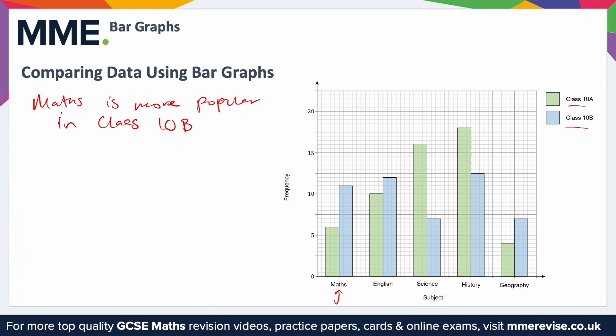What other conclusions could we make? Well, of course you could do a similar thing for English — you could say English is more popular in class 10B. Or we can look at this bit and say history is more popular in class 10A, because the green bar is longer. So when it's represented like this side by side, it's relatively easy because you just choose whichever bar is taller or shorter depending on the context.